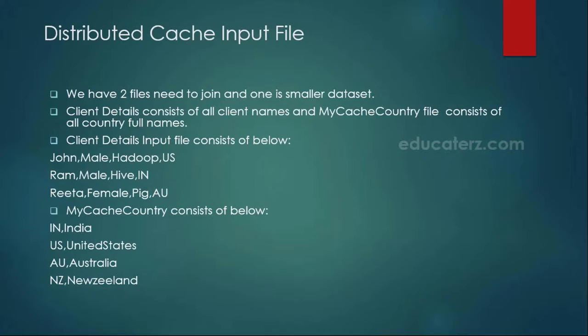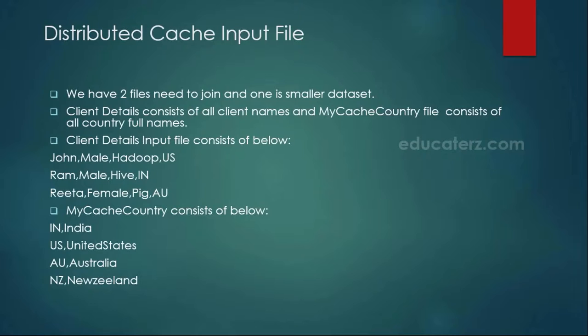Here in this example, we are going to deal with two input files. One is the client details and another one is the my-cache-country. One is a small data set and another is the detail file. In the client details file, it has all the client names, what course the client has joined, and which country they are from — like John, male, joined Hadoop, from US; Ram, male, joined a Hive course, with a country code. The full country details — US is United States, IN is India — are available in another file called my-cache-country.